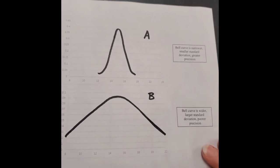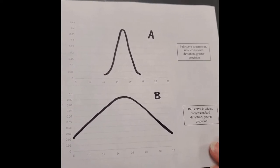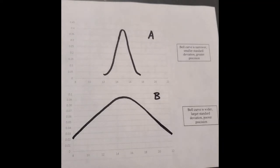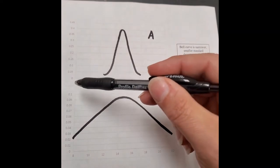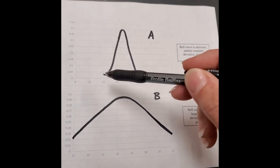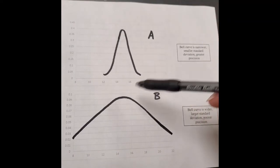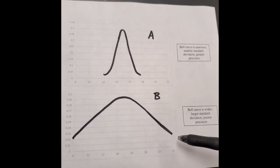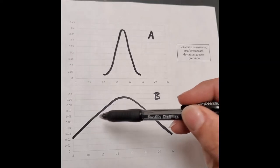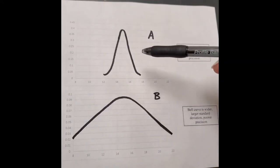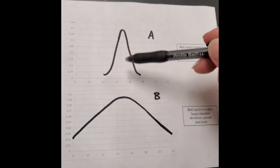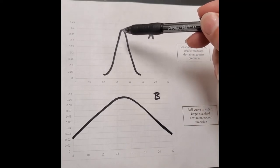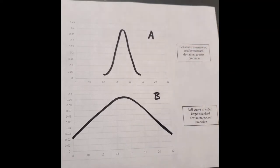Set A and set B are graphed here as bell curves, and you always look at bell curves in relation to standard deviation. With the same scale from 8 to 22, set A has a sharper curve than B, which is spread over a wider area. So set B is clearly less precise. With set A, 68% of the data is clustered within ± 1 of the mean of 15. The narrower the curve, the smaller the standard deviation, and the greater the precision.